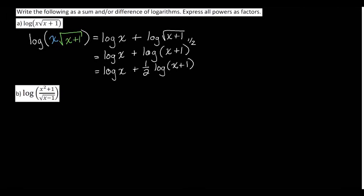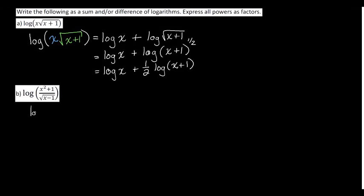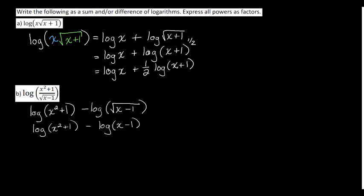For the next example, we have a division on the inside of the logarithm. So that means what was on top becomes positive when we split it apart. And what was in the denominator comes apart as a subtraction. It becomes negative. Now again, we can rewrite the square root as a 1 half exponent.